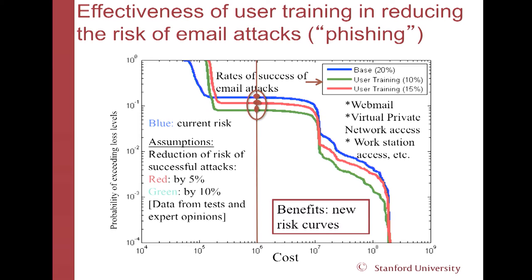Here, we looked at the effectiveness of training people in not responding to phishing. The blue curve shows what happens when 20% of people actually push the wrong button. The red curve shows when you have trained them to reduce that to 15%. And the green line shows when you give enough training so that half the people who would have responded otherwise don't. And you see that there is quite a big difference in the chances of exceeding high costs — so, very beneficial.